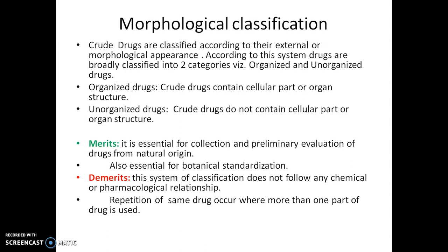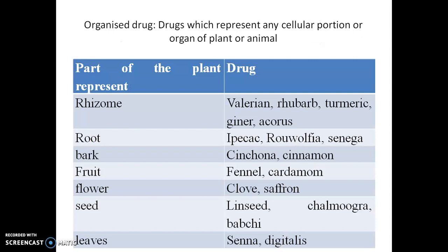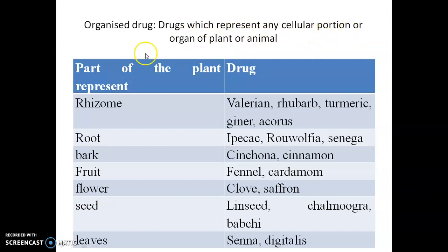Let's see examples of this classification system. Organized drugs represent any cellular portion or organ of a plant or animal. Under rhizome, the drugs include valerian, rhubarb, turmeric, ginger, and acorus.